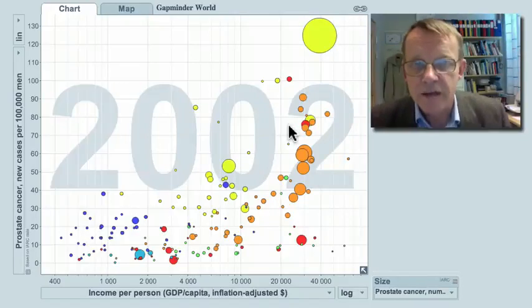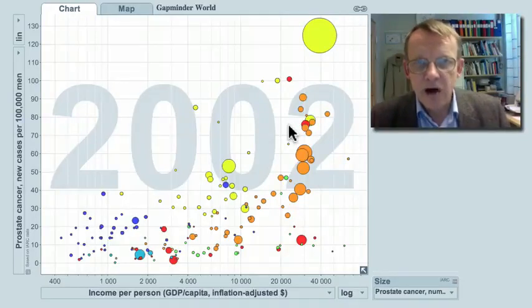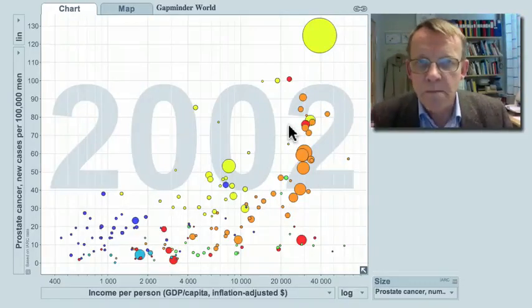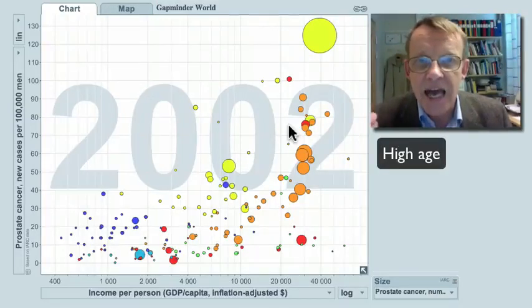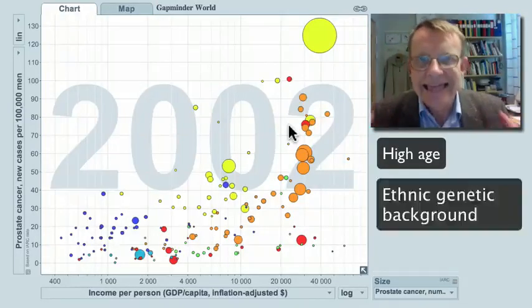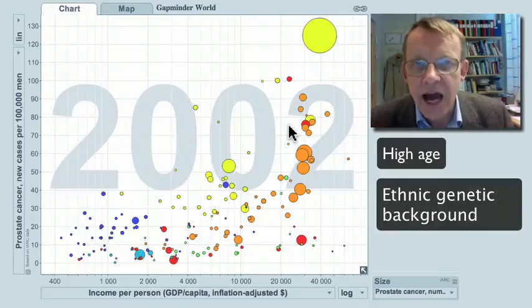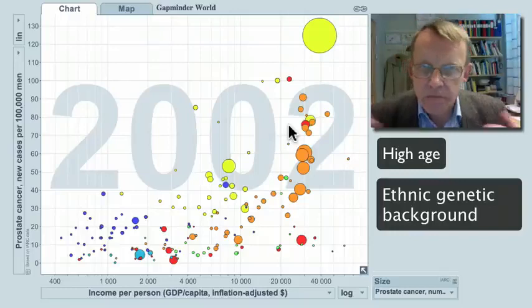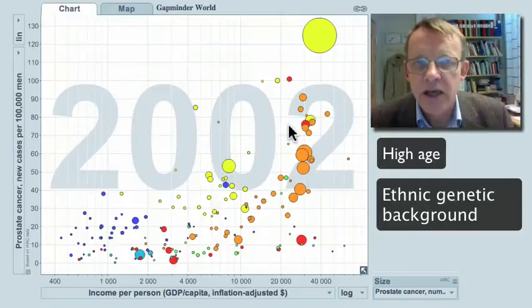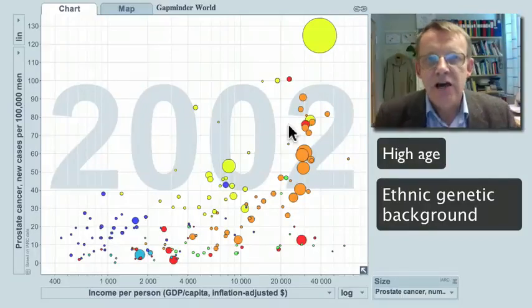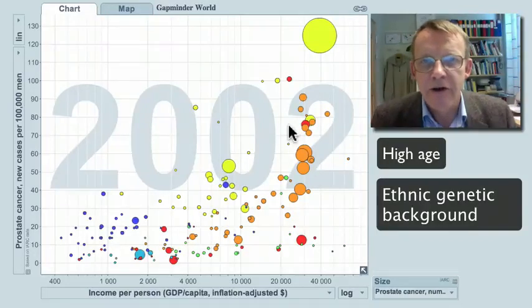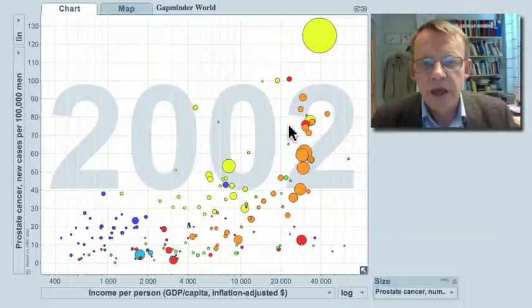And the reason for that is that, as far as research goes, the two major known causes for prostate cancer in men are high age and ethnic genetic background. There is a higher risk for this disease in men with Caucasian, European and North American origin, and in men with African origin, than for other population groups in the world.